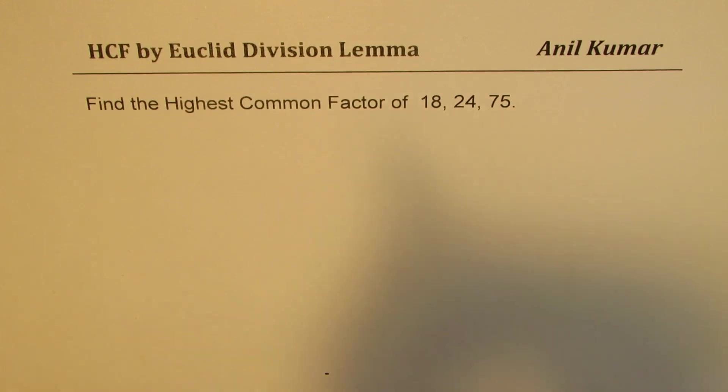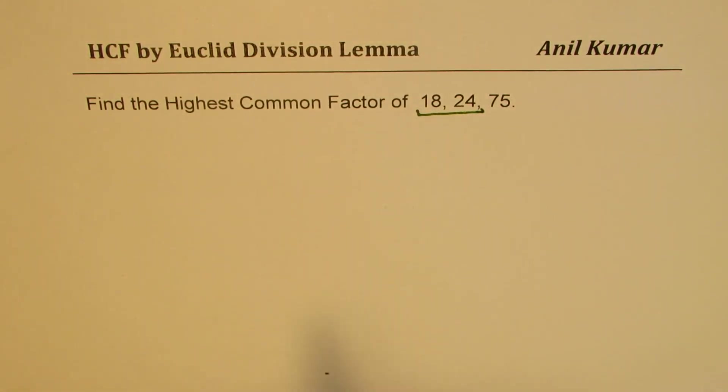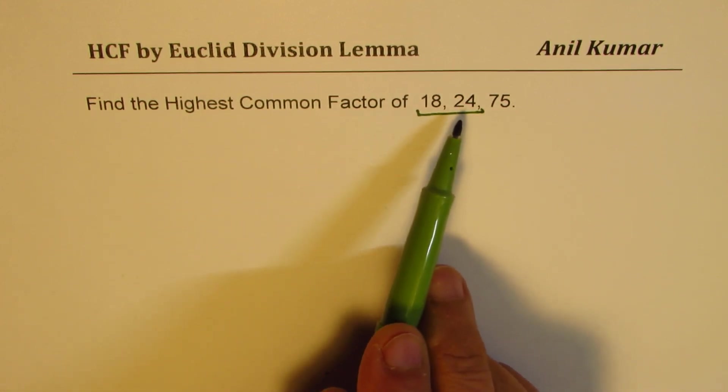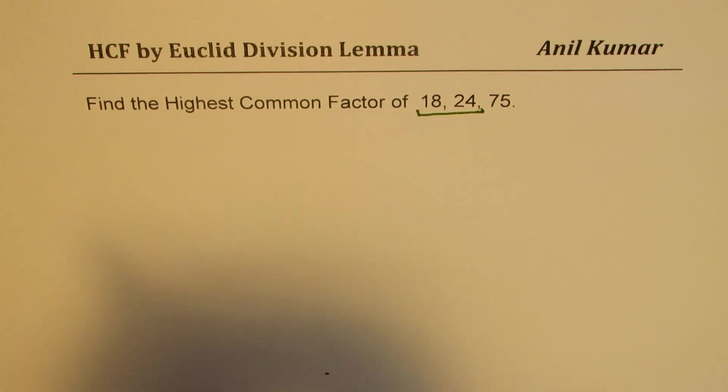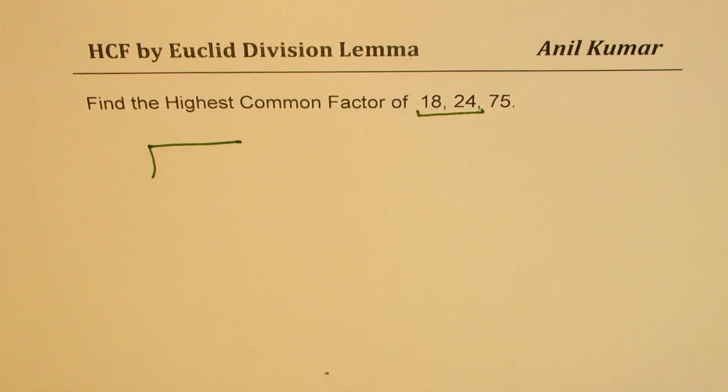Let us see how to do it. So let me begin with the numbers 18 and 24. We'll first find the highest common factor of 18 and 24, and using that result, we'll find the highest common factor between 75 and that number. Now it begins by dividing repeatedly one number by the other.